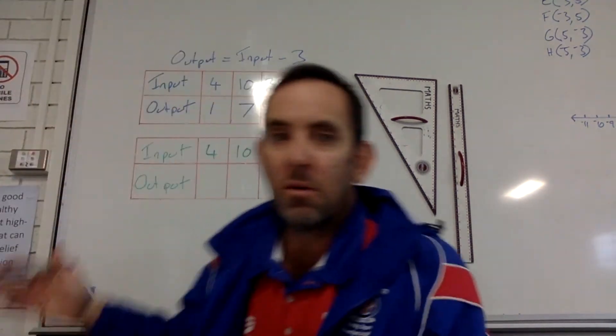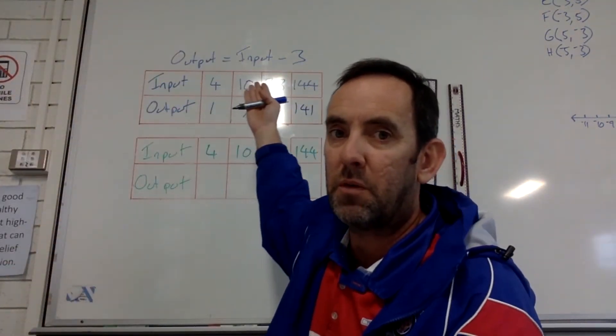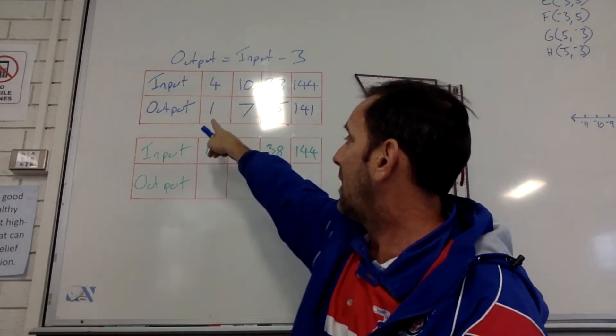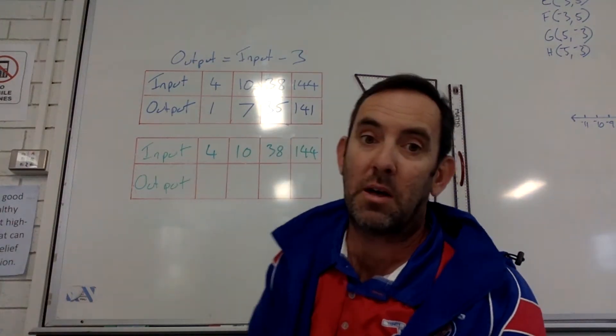So, for that first rule, output equals input minus 3. All I do is I substitute the input in, and then I get some output numbers underneath.